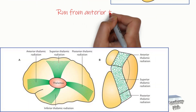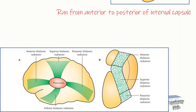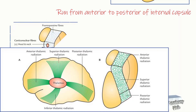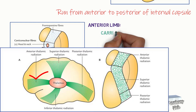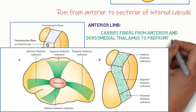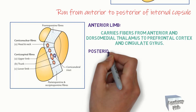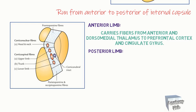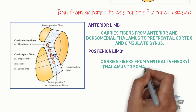Thalamocortical fibers run from anterior to posterior of the internal capsule. In the anterior limb, they carry fibers from the anterior and dorsomedial thalamus to the prefrontal cortex and cingulate gyrus. In the posterior limb, they carry fibers from the ventral sensory thalamus to the somatosensory cortex.